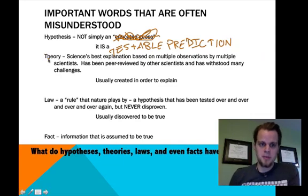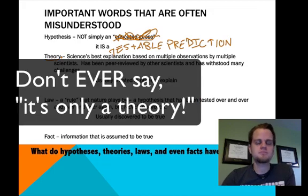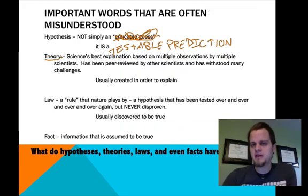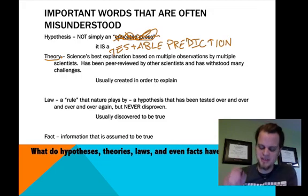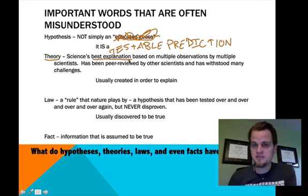Next up is theory. Theory is often misused. The worst way it's used is when people say 'it's only a theory.' Don't ever use that, because when you minimize it by saying 'just a theory,' it makes it sound like it's just a hunch a scientist had — and that's not true. A theory is science's best explanation. You have a lot of scientists working on it; it's not just one person's hunch.